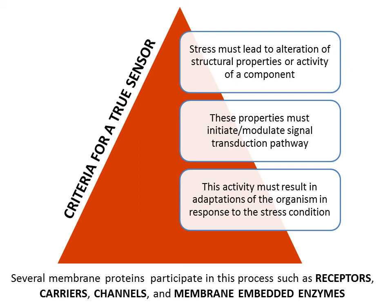Even so, there are some properties that make up the criteria for a true sensor. First, whenever there is stress, there should be some change in the structural property or activity of that component. Second, it must be able to transfer that change to further compartments — there should be signal transduction, a relay of the message. Third, beginning with this structural and functional change in the sensor due to stimulus perception, there should be some change in the biochemistry and physiology of the cell or organism so that a response is generated. If all three properties are present, a component may be considered a true sensor. Receptors, carriers, channels, and several enzymes can be considered sensors for stimulus perception.